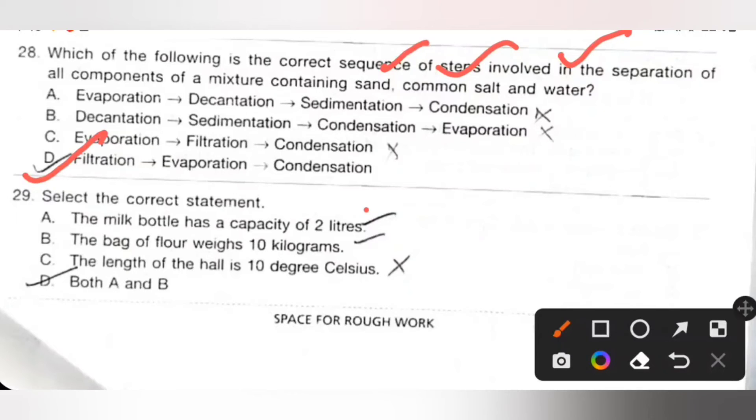Twenty-ninth: Select the correct statement. Option A: The milk bottle has the capacity of 2 litres, it is the correct statement. B: The bag of flour weighs 10 kg, it is also correct statement. C: The length of the hall is 10 degrees Celsius, it is incorrect because the length of the hall is measured in meters. So both A and B are correct statements. Option D.